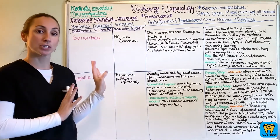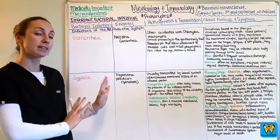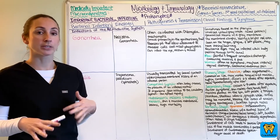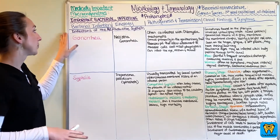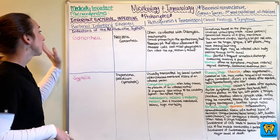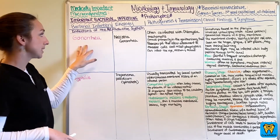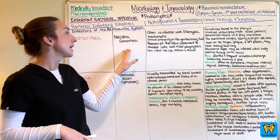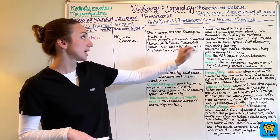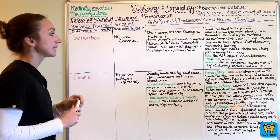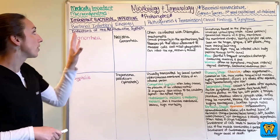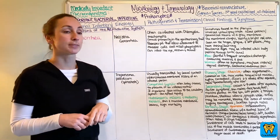We are finishing up our section on bacteria, so we're going to be discussing a couple more bacterial diseases. We have infections of the reproductive system. We're going to go over the type of bacterial infection, etiology, pathogenesis, transmission, as well as your clinical findings and symptoms. As a reminder, our bacteria are prokaryotes.